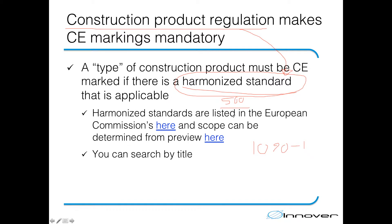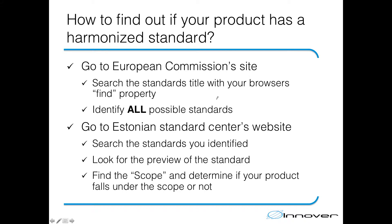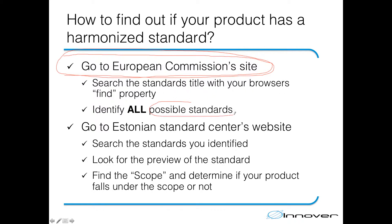The way to determine if your product must be CE marked consists of two parts. First, we have the European Commission site that has listed all harmonized standards. The problem is that this site only has the titles and reference numbers of the standards, but nothing more. What you are required to do is determine if your product falls under the scope of any of the standards. From the European Commission site you can identify possible standards where the title matches your product. Then you must go to the Estonian standards center website where you can see a preview of each standard and determine if the scope includes your product.